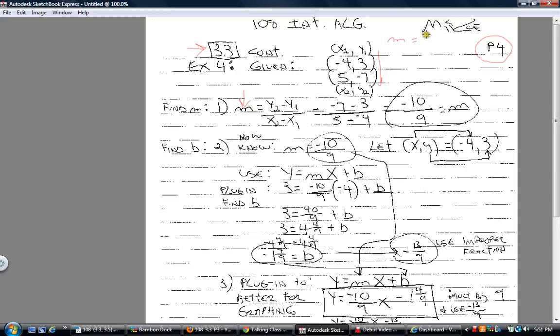Change in the y, which is vertical, 3 minus minus 7, all divided by the change in the x coordinates, which is the horizontal, negative 4 minus 5. You do the arithmetic real quick on that and you'll come up with the same answer of negative 10 ninths. I just want to show that for you. It doesn't matter which way.